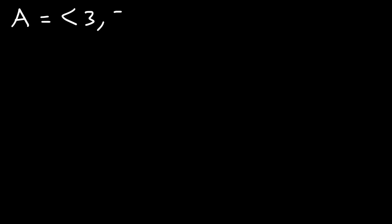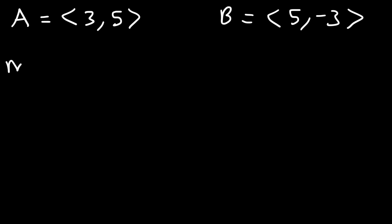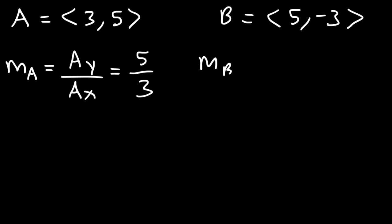Let's work on an example using two-dimensional vectors. So let's say we have vector A, which is (3, 5), and vector B, which is (5, -3). Go ahead and determine if the two vectors are parallel, orthogonal, or neither. A quick test we can employ is calculating the slope of each vector. For vector A, if we take the Y component and divide it by the X component, we get 5 over 3. For vector B, that's negative 3 over 5.